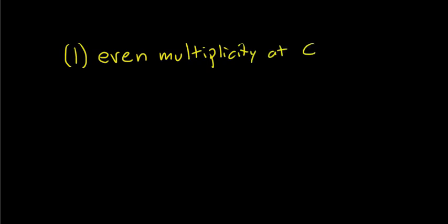So the first case is if you have a zero and you have even multiplicity. Say you have even multiplicity at C, and C is a zero. If that's the case, if you have even multiplicity, what happens is the graph of your function touches and turns around.